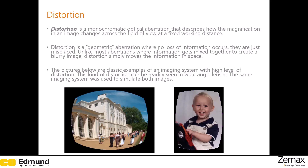These two pictures are classic examples of distortion. This kind of distortion is very common in systems where wide-angle lenses are used. Fish-eye lenses are a prime example of that.